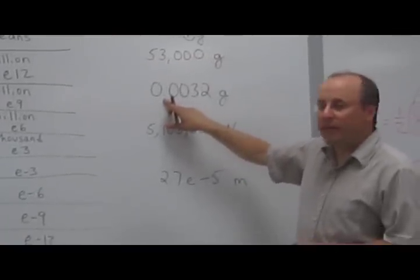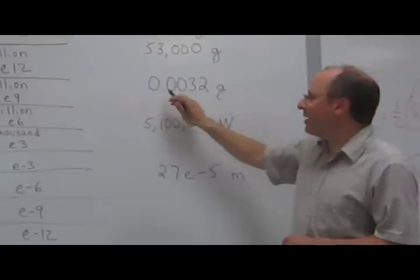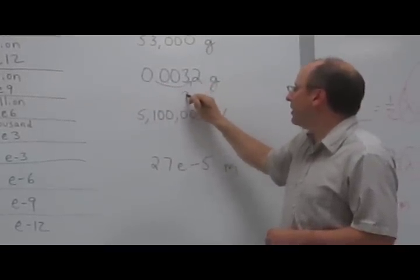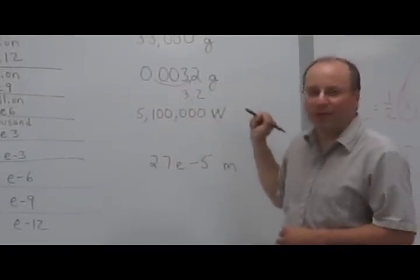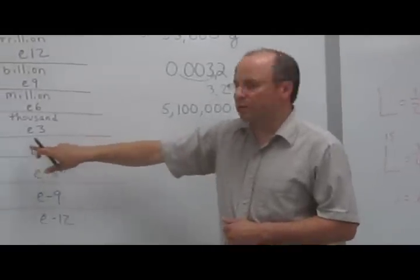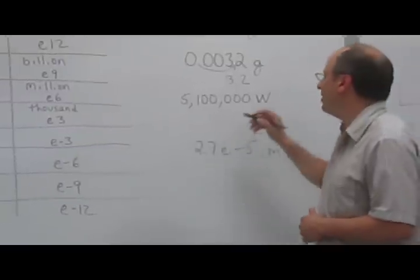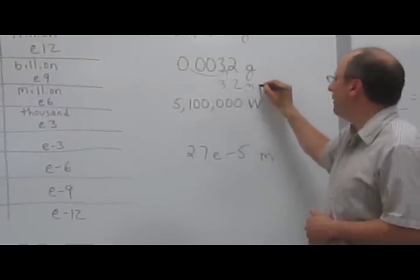When you have very small numbers, again, you want to move them in groups of three. So you'd move this thing over three spots, and you'd get 3.2, and this would be milligrams, because we moved it over three spots to a number smaller than one. So 3.2 milligrams.